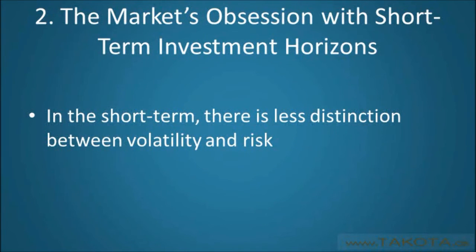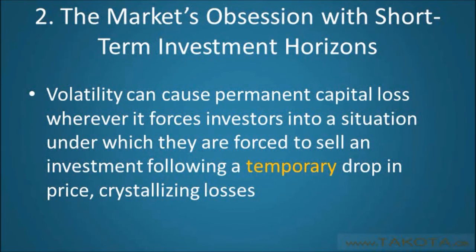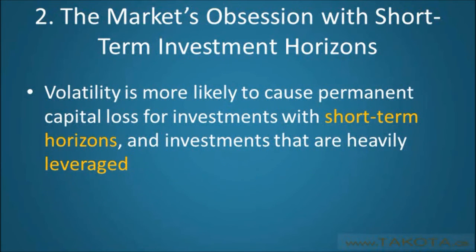The second factor that leads risk and volatility to be lumped together is the market's obsession with short-term fad investing. In the short term, there is less distinction between volatility and risk. This is because volatility can cause permanent capital loss wherever it forces investors into a situation under which they are forced to sell an investment following a temporary drop in price, crystallizing losses. Generally, this occurs wherever investors or clients adopt a short-term horizon for holding an investment or where an investment is significantly leveraged.